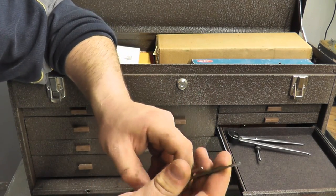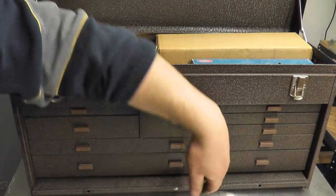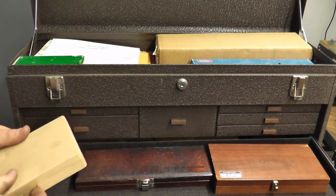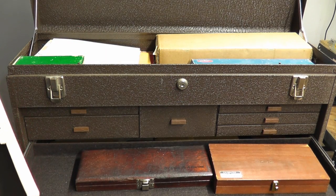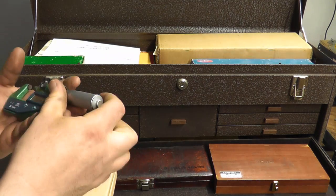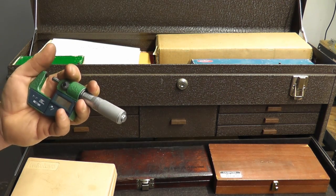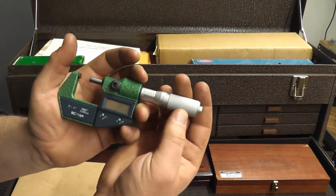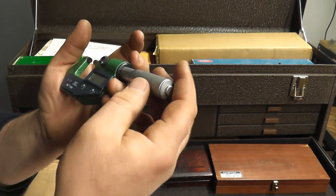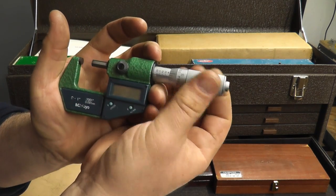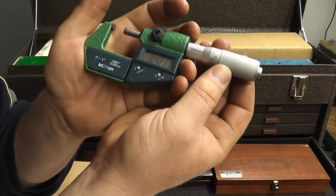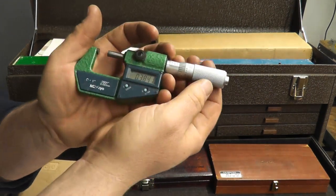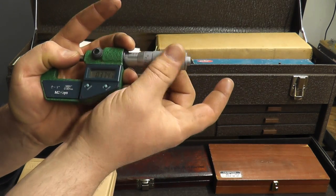Another digital Mitutoyo. I had bought this one. It's graduated in ten thousandths of an inch. I don't know if you can see, but the battery light, it works, but the battery looks a little weak. You can see it moving there. That display definitely could be brighter. It does have the friction thimble on it.